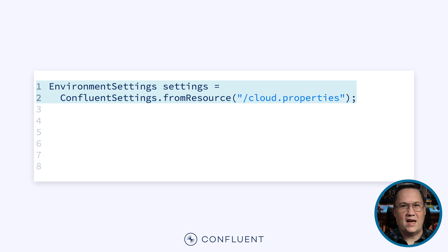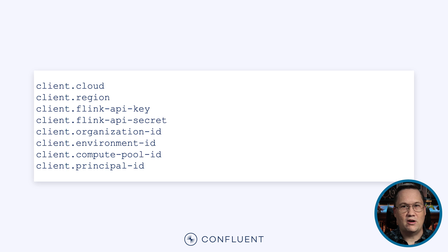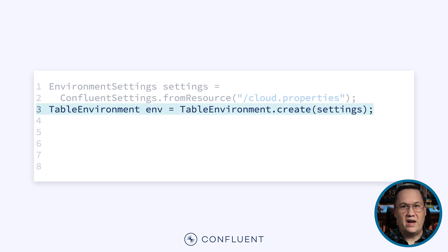To start, we need a table environment that will be the foundation for our Table API code. To create one, we use environment settings, which come from the Confluent settings from resource method. It takes a properties file that contains the necessary connection parameters. The file will contain a variety of configurations like those you see here. Depending on your needs and the version of the Confluent plugin you use, the exact settings may vary. If you want more detail, check out the exercises for this course, or look for links in the video description. Once we have our settings, we can create a table environment. At this point, the Confluent plugin will do some magic to make our lives easier. Let's talk about what that magic is.